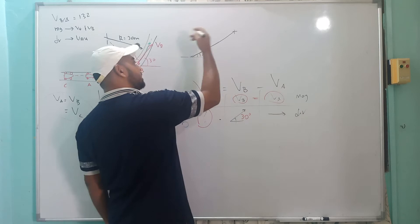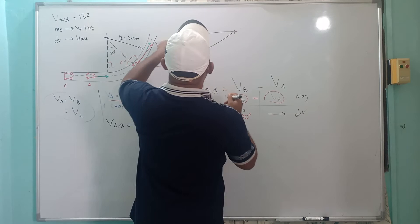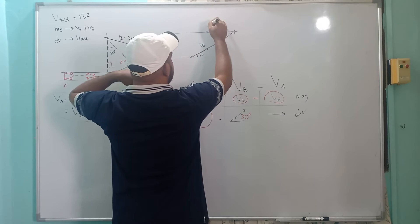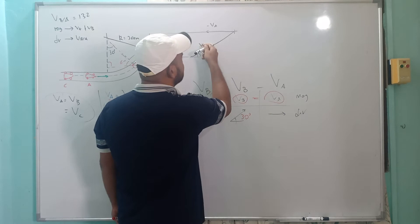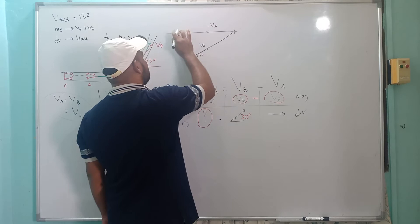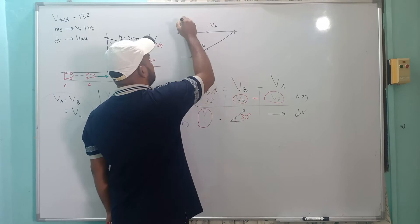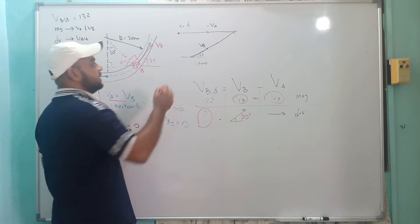Then at the tip of VB, add minus VA, which is in the opposite direction of VA. We know VB equals VA, so both vectors must be drawn at the same length. The resultant V_BA goes from the start point of VB to the end point of minus VA.